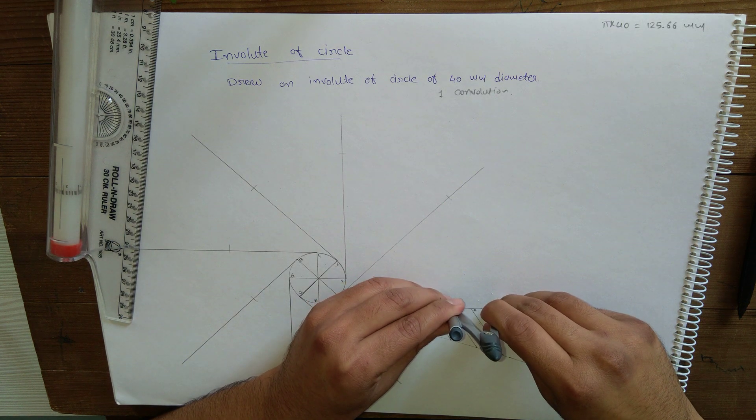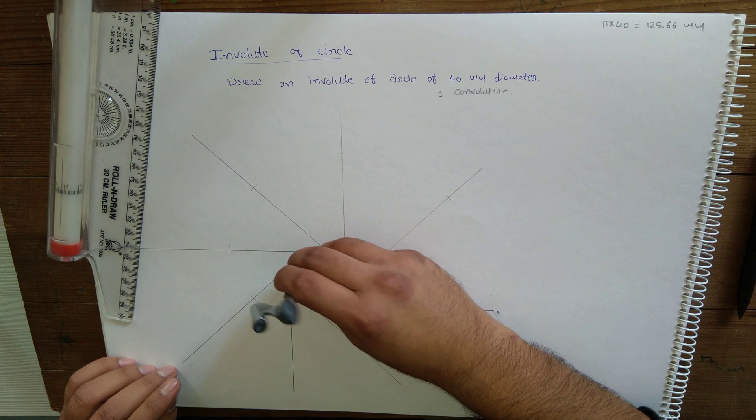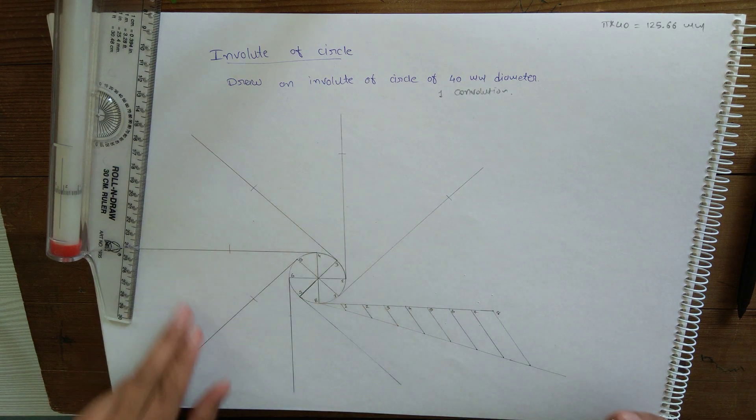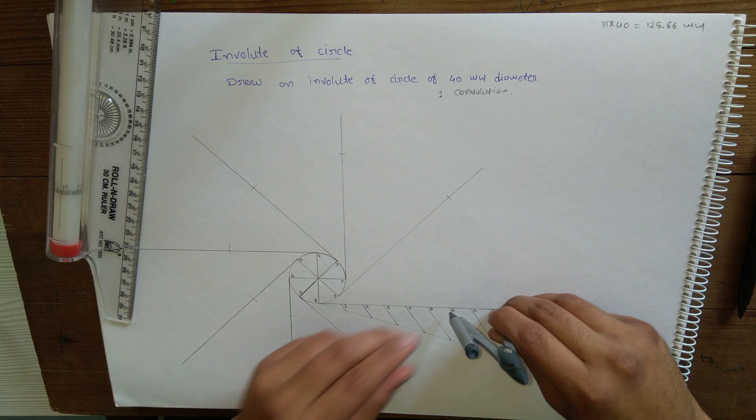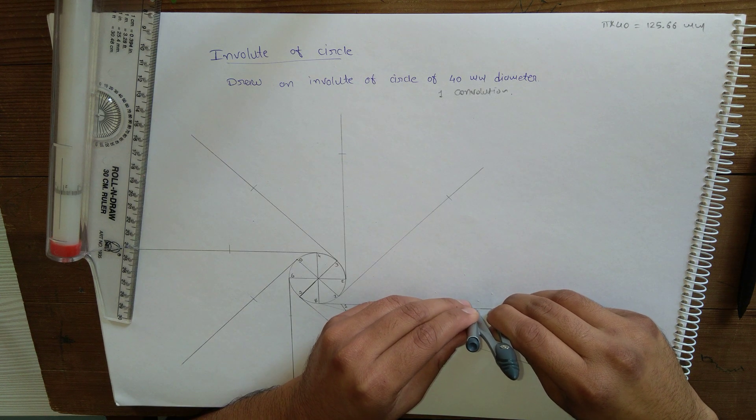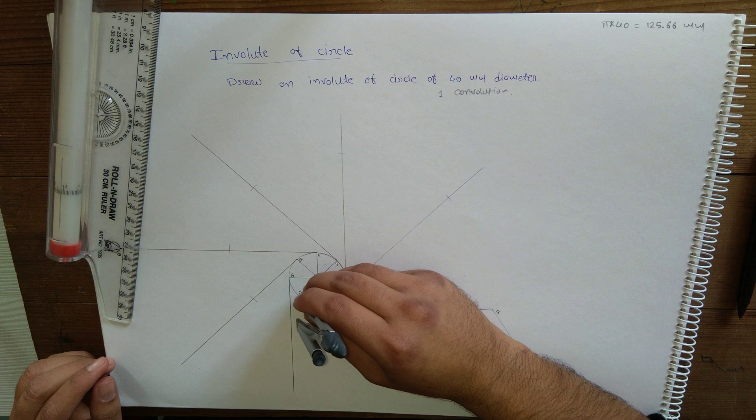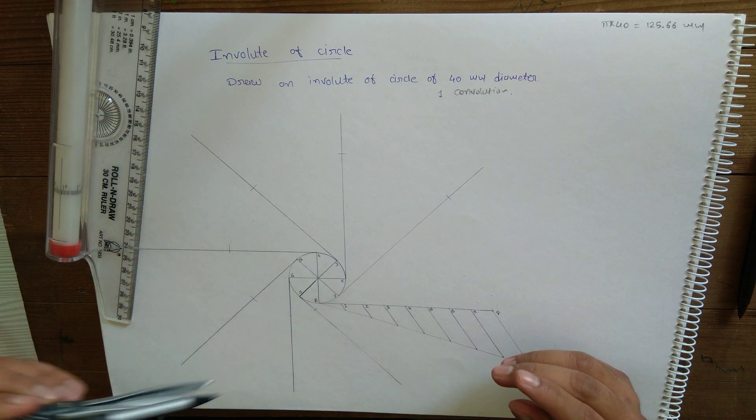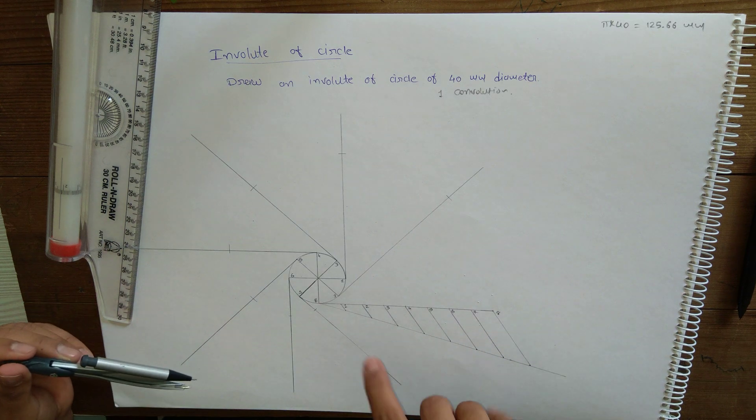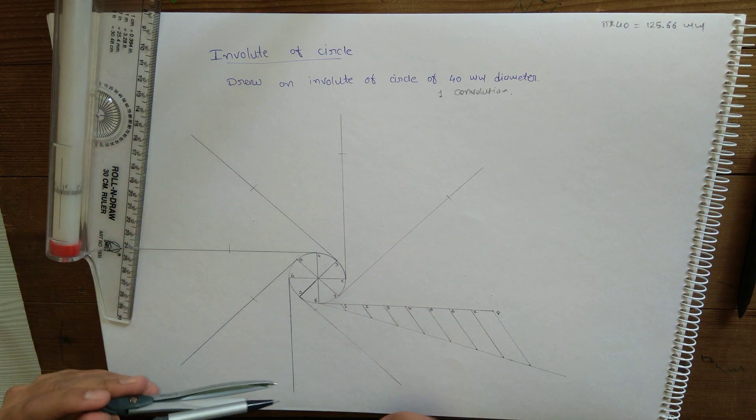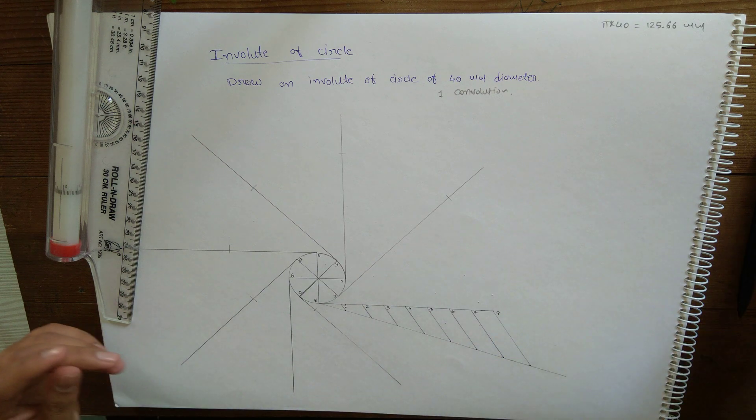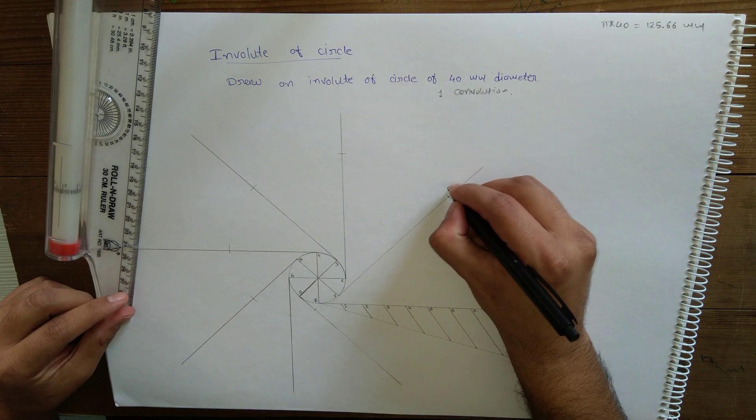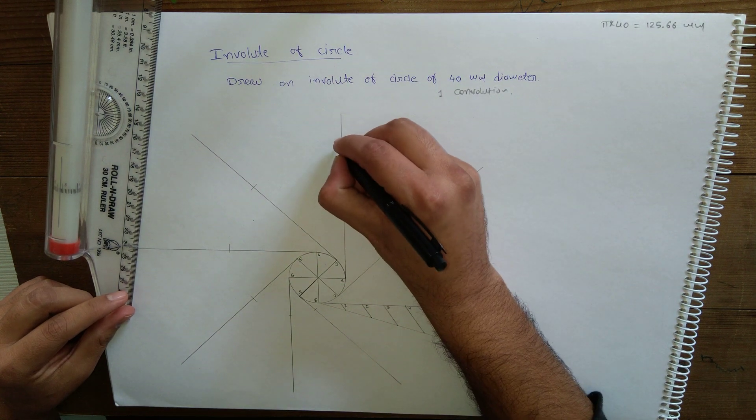Unlike involute of polygon and involute of line, here we are just marking the points and then we are going to connect these points with the help of French curve or freehand sketch. In involute of line and involute of polygon there we were directly drawing arc with the help of rounder, but here we are just marking points and then we will connect this with freehand sketch.